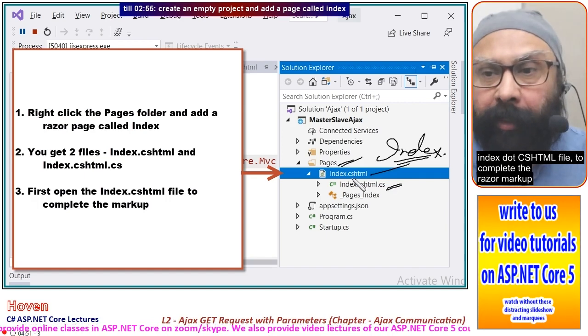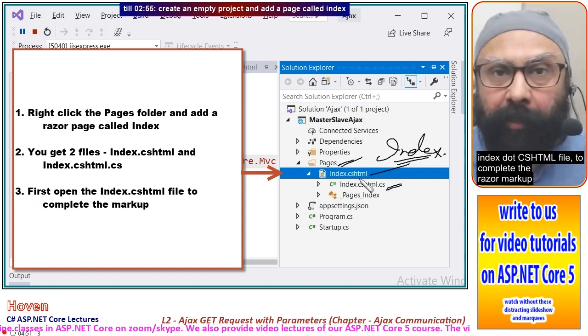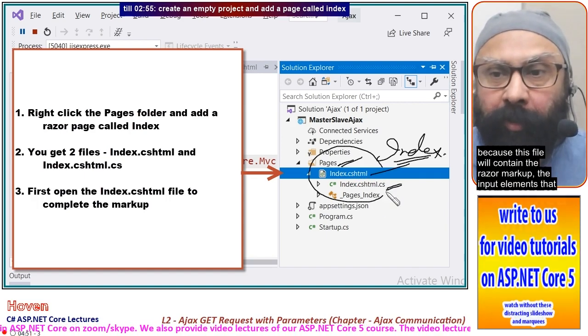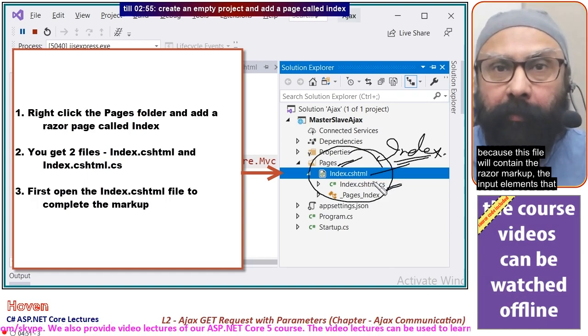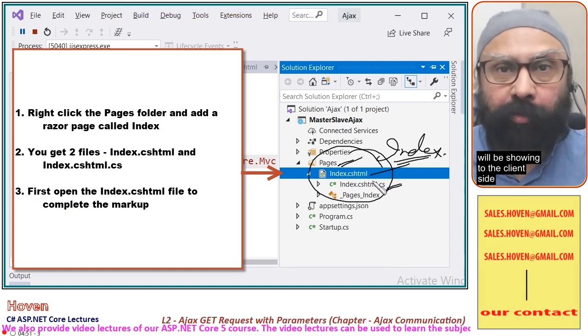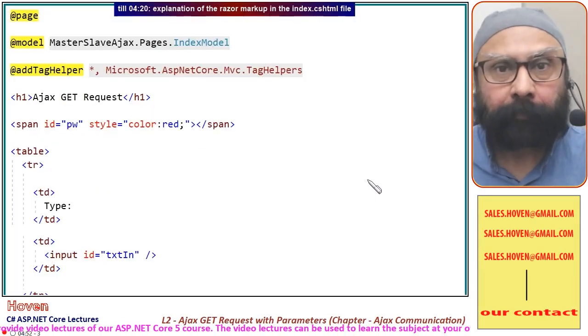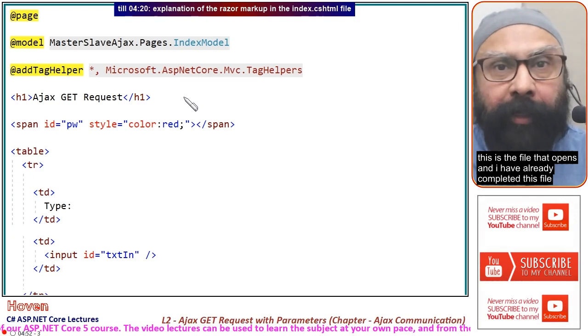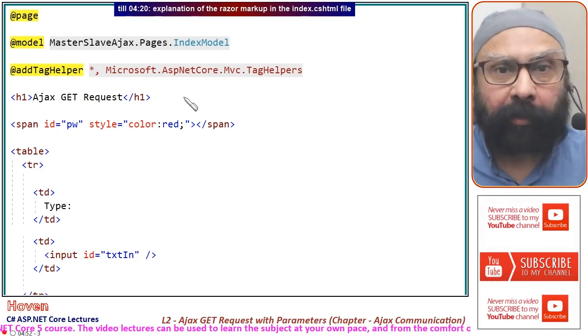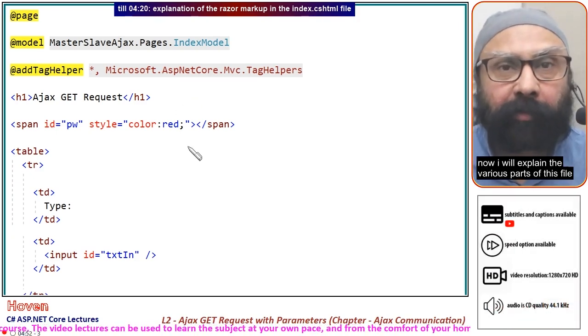Let us open the index.cshtml file to complete the Razor markup. This file will contain the Razor markup and input elements that we will show to the client side. I have already completed this file and will explain the various parts.